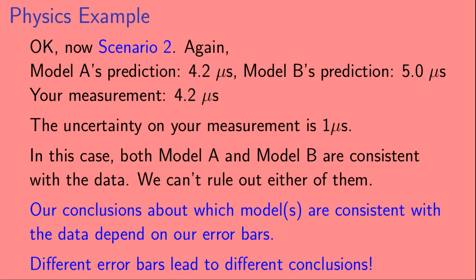In this case, both Model A and Model B are consistent with the data. We can't rule out either of them. Our conclusions about which models are consistent with the data depend on our error bars. And different error bars will lead to different conclusions.